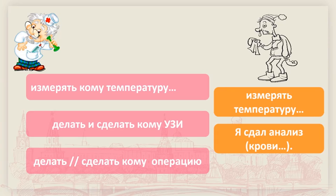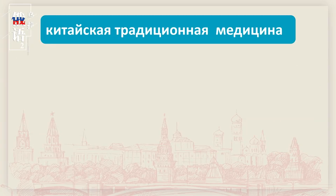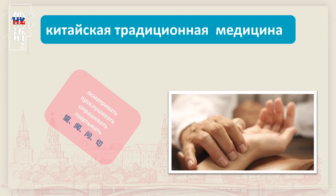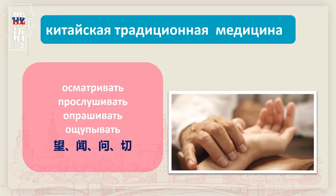那我们来看一下，中医是怎么治病的。китайская традиционная медицина（中国传统医学），这是完整说法。看看有哪些动词，中医治疗时要用望闻问切。俄语动词：第一个осматривать（看、检查），和西医用同一个动词。第二个文，用的是прослушивать，前面加前缀пра，表示聆听。